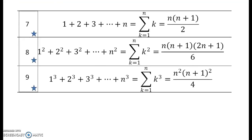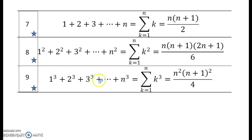A few more very standard expansions in mathematics: the seventh one is 1 plus 2 plus 3 and so on up to n — summation k from k equals 1 to n. It is nothing but the total of the first n natural numbers, which is n times n plus 1 divided by 2. The eighth one is the total of the squares of the first n natural numbers, given by n times n plus 1 times 2n plus 1 divided by 6. The ninth one is the sum of the cubes of the first n natural numbers, which is n squared times n plus 1 the whole squared divided by 4.